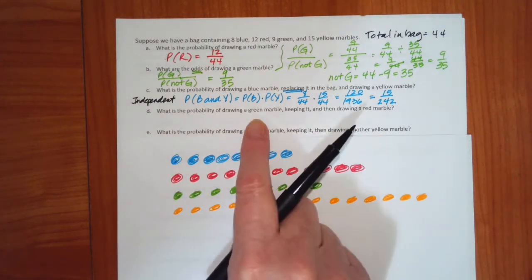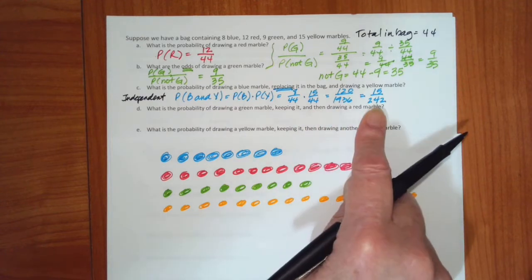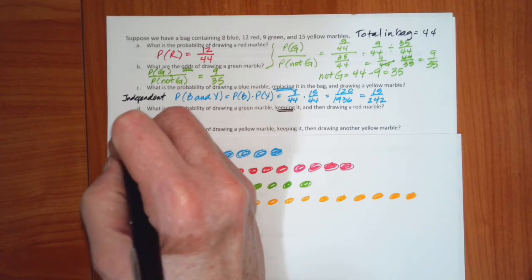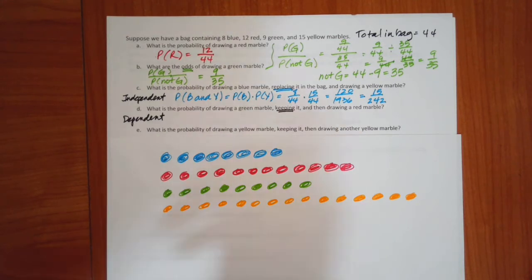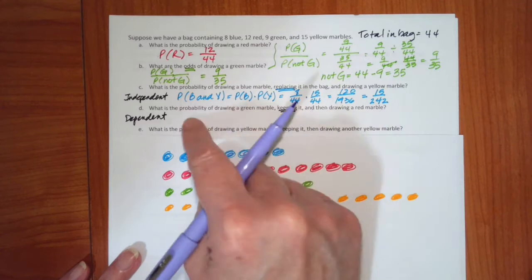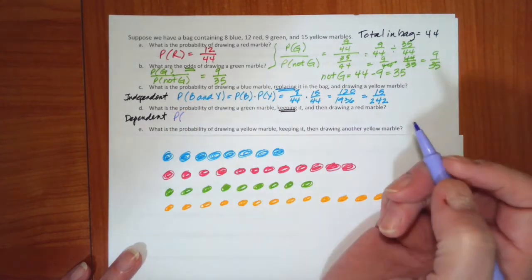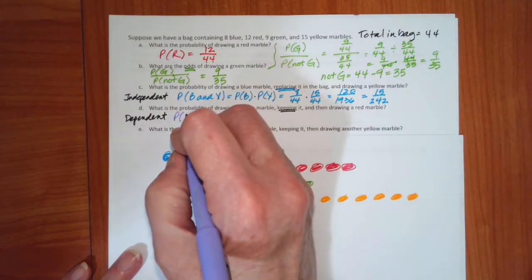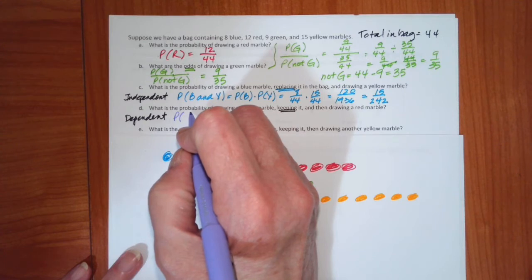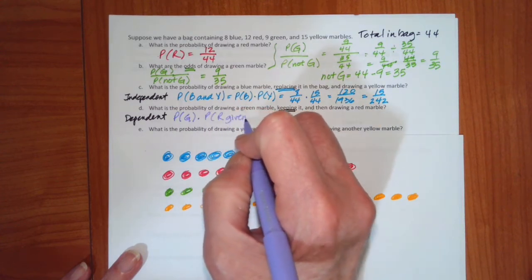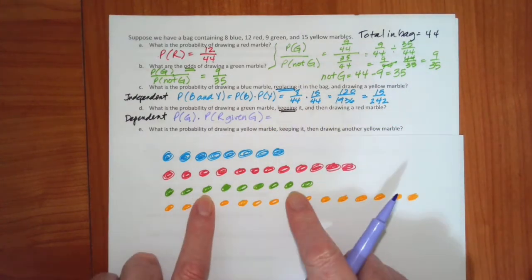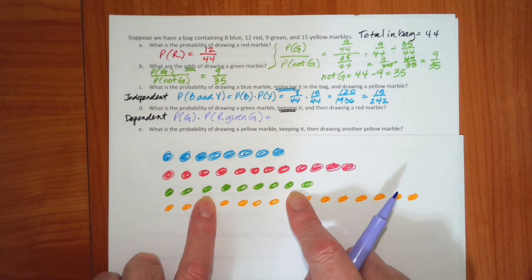Now our next one, the probability of drawing a green, keeping it and then drawing a red. Keeping it means this is going to be dependent. We're changing what is in the bag. What happens the second time depends on whether or not we've got it the first time. Okay, so this is going to be the probability of a green times the probability of a red given green. Okay, so the probability of a red given green. We know that. That is going to be 9 out of 44.